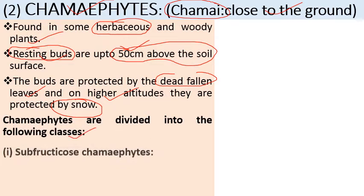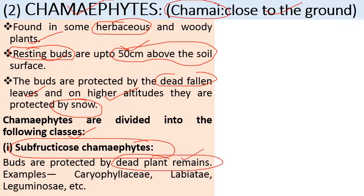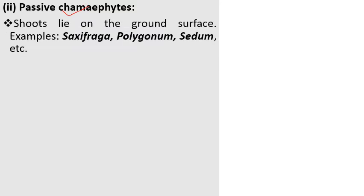Chamaephytes are further divided into different classes. First are Sub-fruticose Chamaephytes — the buds are protected by dead plant remains such as dead fallen leaves and branches. Examples include plants of the families Caryophyllaceae, Lamiaceae (also known as Labiatae), and Fabaceae. This photograph shows plants with protecting buds present up to a height of 50 centimeters, where buds are protected by dead fallen leaves at lower altitude and by snow at higher altitude.